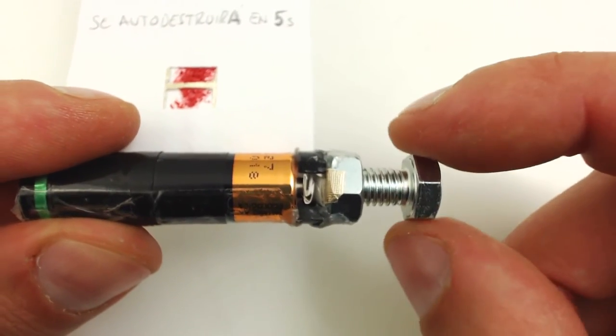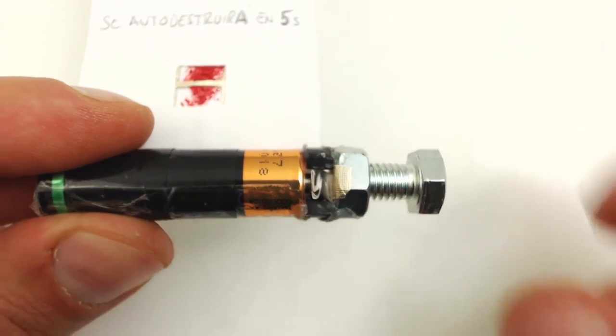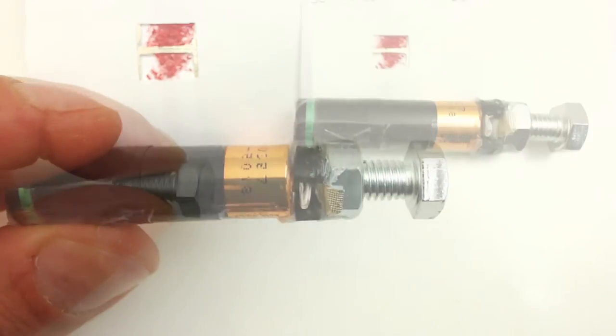Later on, the turning of the bolt pushes the metallic paper towards the battery like so. This then closes the circuit, initiating the spark that leads to the destruction that you witnessed earlier.